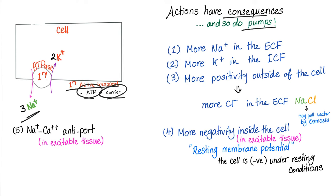The moral of the story: metabolism produces acids, and metabolism takes place in the cytosol and mitochondria — inside the cell. That's why the ICF is more acidic. The ECF contains the alkaline reserve — bicarbonate — to buffer the acidity from inside the cell. That's why blood pH is normally slightly alkaline at 7.4. We don't need an acid reserve; we have plenty of acids already. We need an alkaline reserve to neutralize them.